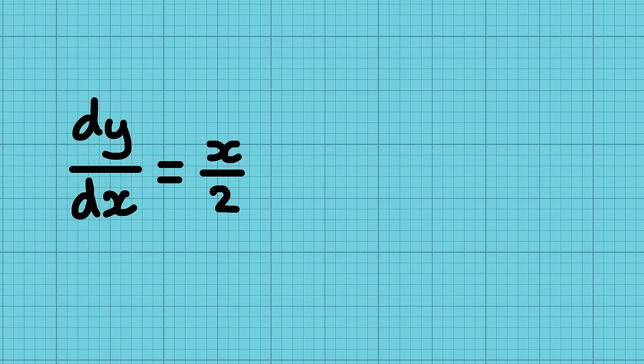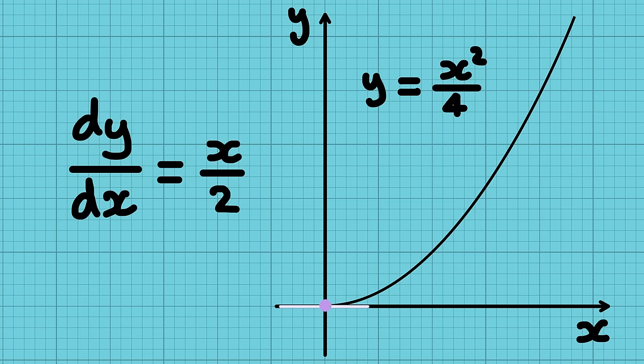And finally, related to integration is differentiation, which looks like this, and it's an operation that looks at how the steepness of a line changes, called the gradient of a line.